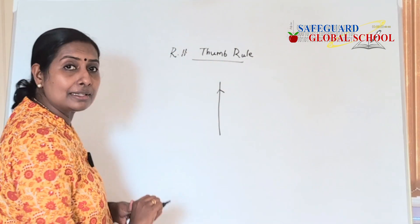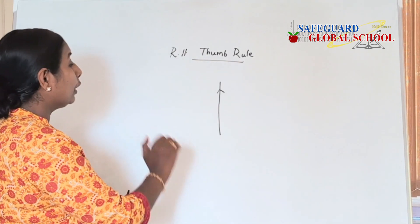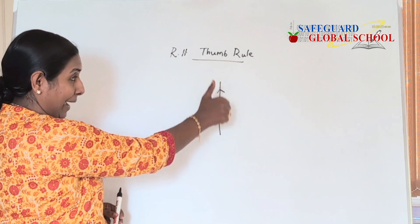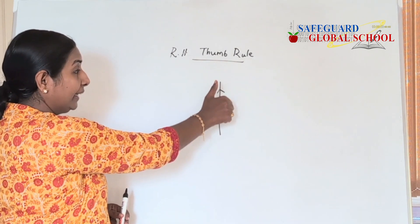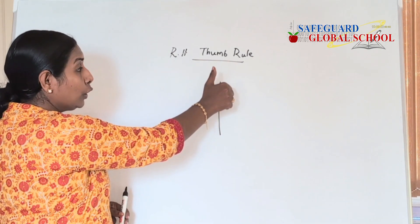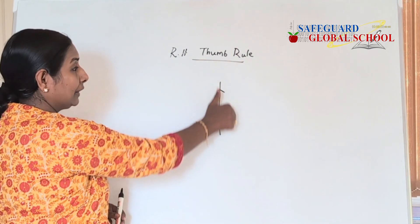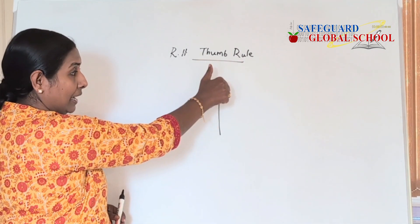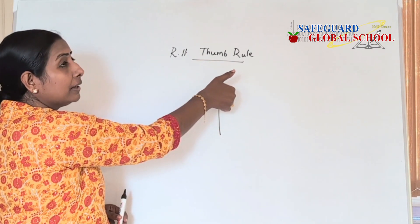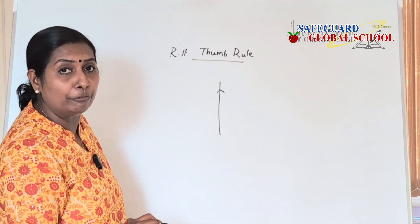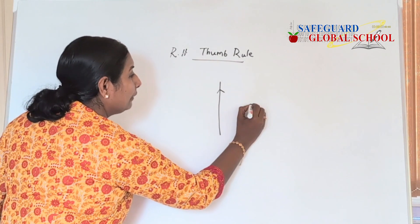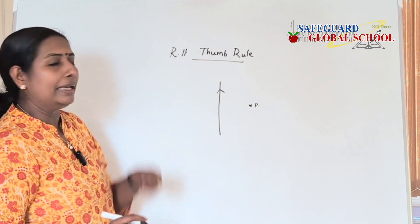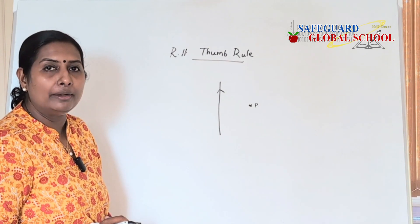So while we apply this rule, suppose a current carrying conductor is like this. We are going to grasp it with our right hand — we are imagining that we are holding this current carrying conductor. So what is our direction of the thumb? The direction of the thumb shows the direction of the current and the curling of fingers shows the direction of the magnetic field. So when we consider a point P here, let us analyze what is the direction of the magnetic field.